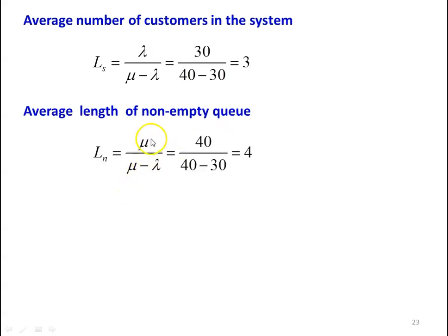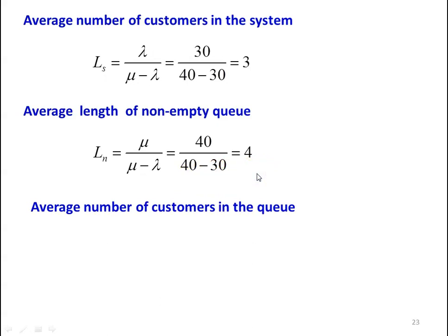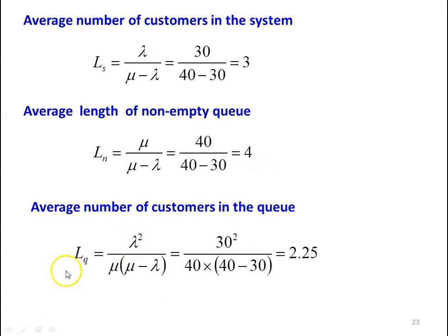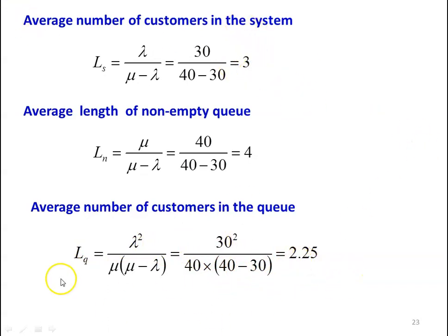Average length of non-empty queue: Ln equals mu divided by (mu minus lambda) equals 40 divided by (40 minus 30) equals 4. Average number of customers in the queue: Lq equals lambda squared divided by mu times (mu minus lambda) equals 30 squared divided by 40 times (40 minus 30) equals 2.25. Number of customers in the queue is 2.25, number in the system is 3. These are the answers to the problem.